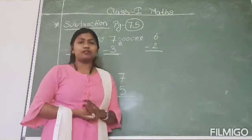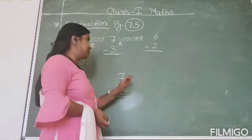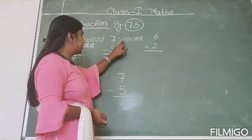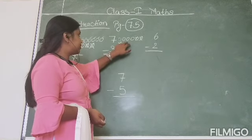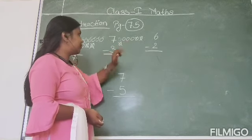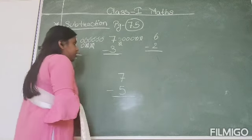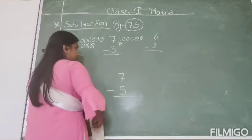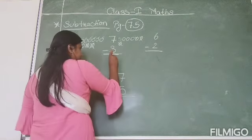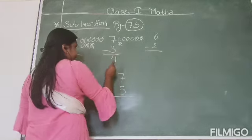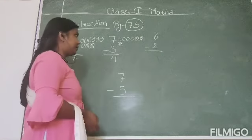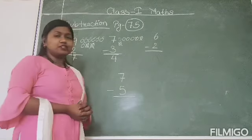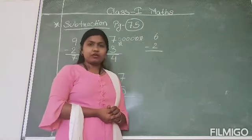Now we will count the remaining circles — one, two, three, four. So how many circles are there? Correct, 4. So 4 circles remain. Now let's continue with the third one.